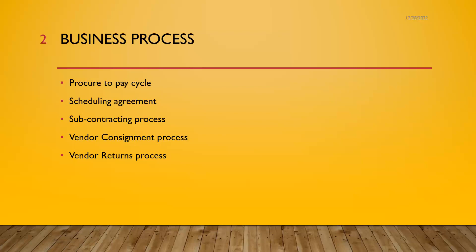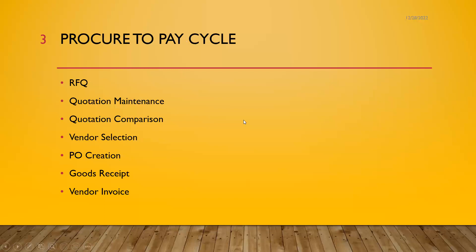These are all basic business processes. Let's look at each one. First, procure to pay cycle. If they ask you what is the procure to pay cycle, get into the subject. RFQ is request for quotation — we request the quotation from the vendor, and the vendor sends us back the quotation. We maintain the quotation in the SAP system and then compare quotations from various vendors.